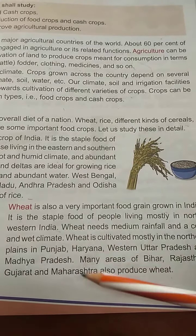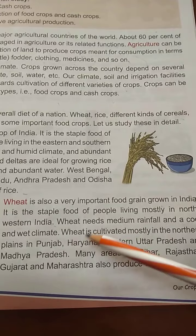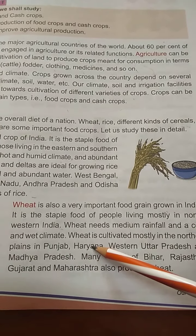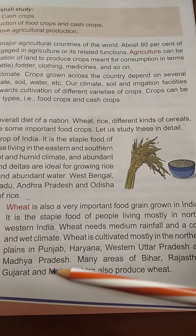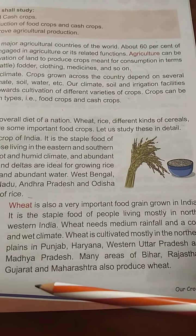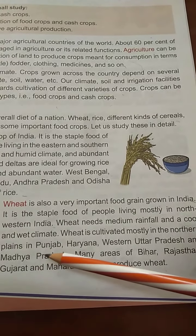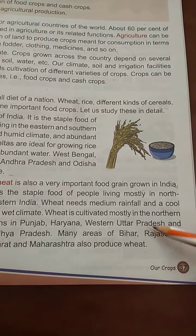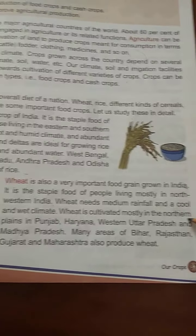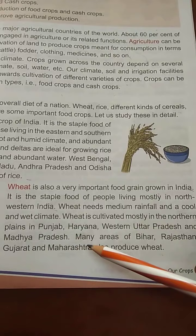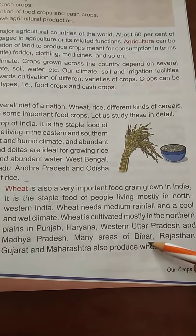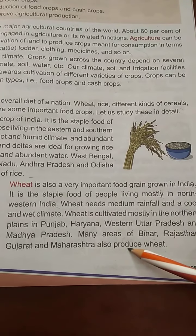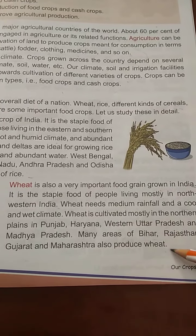Wheat is cultivated mostly in the northern plains of Punjab, Haryana, western Uttar Pradesh, and Madhya Pradesh. Many areas of Bihar, Rajasthan, Gujarat, and Maharashtra also produce wheat.